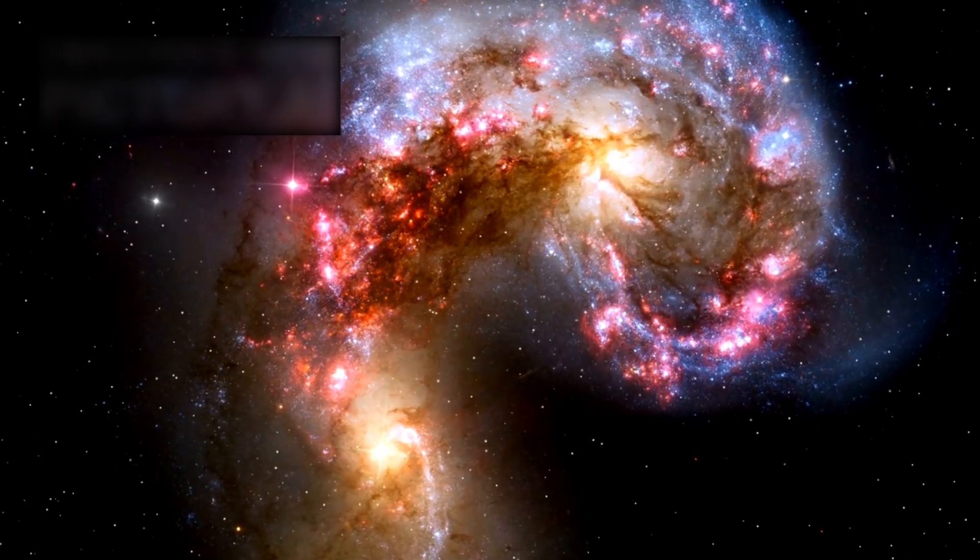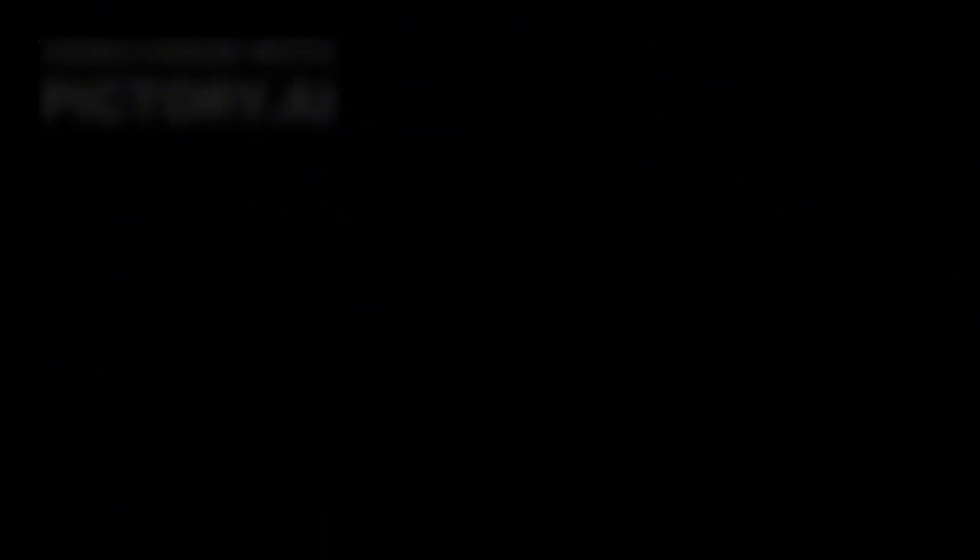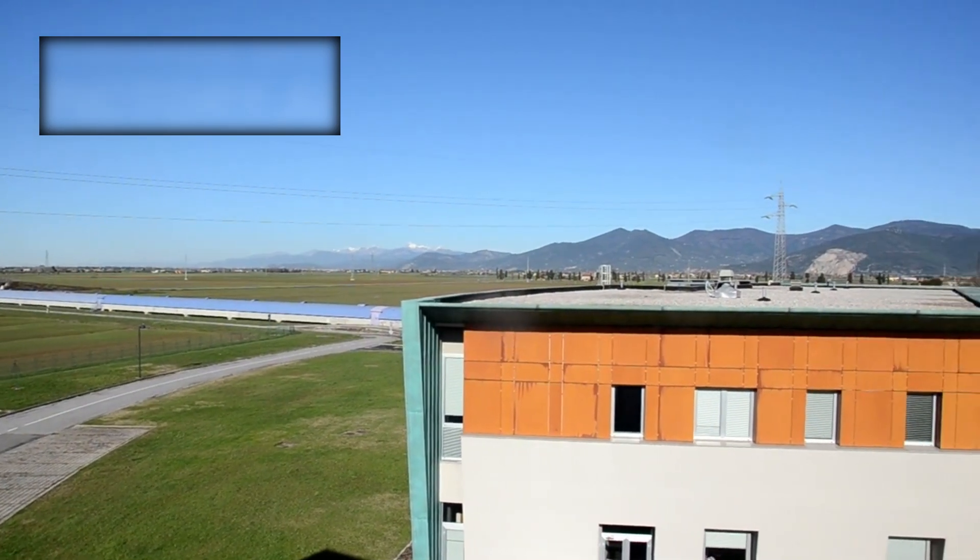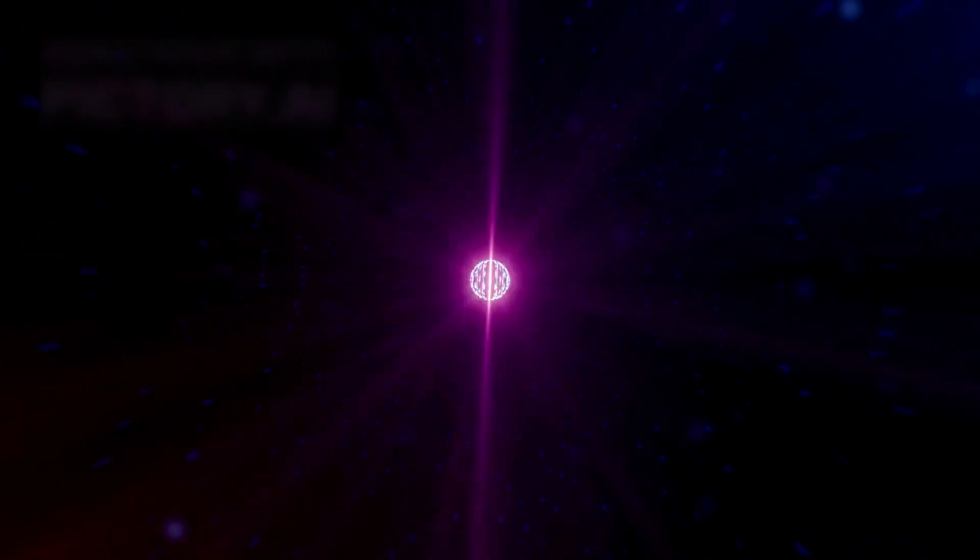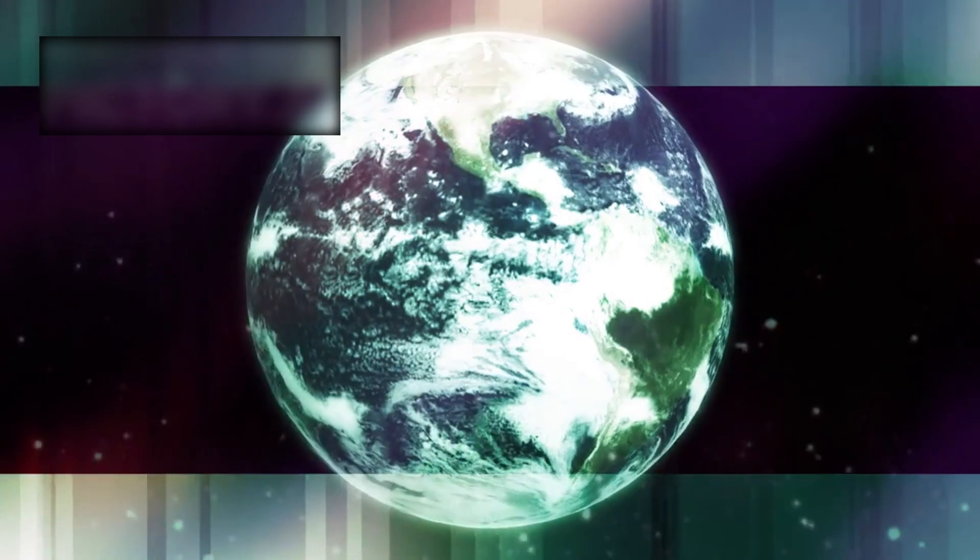Zoom out even further and we find ourselves in the Local Group, a small cluster of galaxies bound together by gravity. That group is part of the larger Virgo Cluster, and the Virgo Cluster itself belongs to the Laniakea Supercluster, a sprawling continent of galaxies containing over 100,000 members. And still, this is only a tiny fraction of what lies beyond.